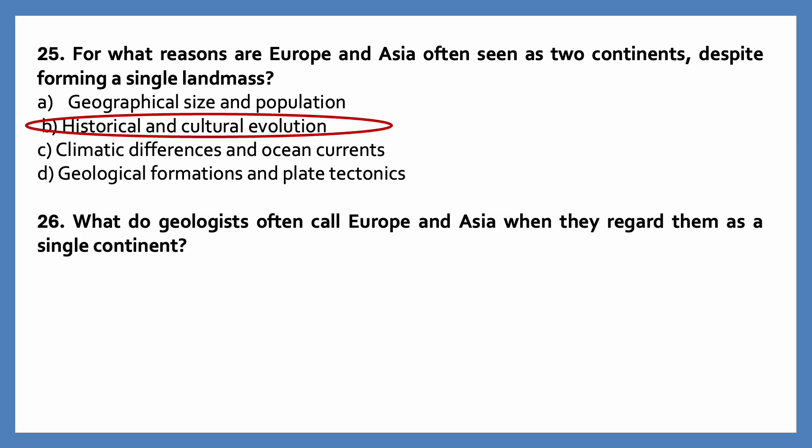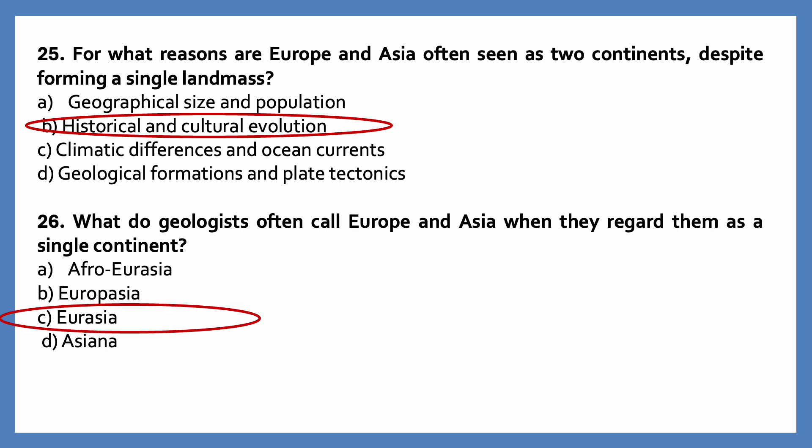What do geologists often call Europe and Asia when they regard them as a single continent? Options are: Afro-Eurasia, Europe-Asia, Eurasia, Asiana. The correct answer is Eurasia.